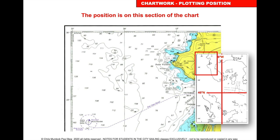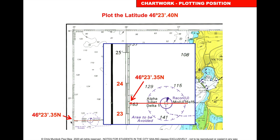Looking at the top left-hand corner of the chart, we know everything above the baseline is 46 degrees. The question asks for 46 degrees 23.35 north, so we count up from 46 degrees: 20, 21, 22, 23 — and then decimal 35, which falls halfway between the 0.3 and 0.4 marks.